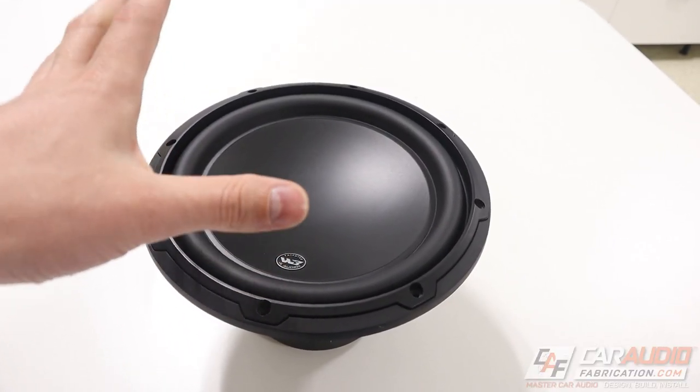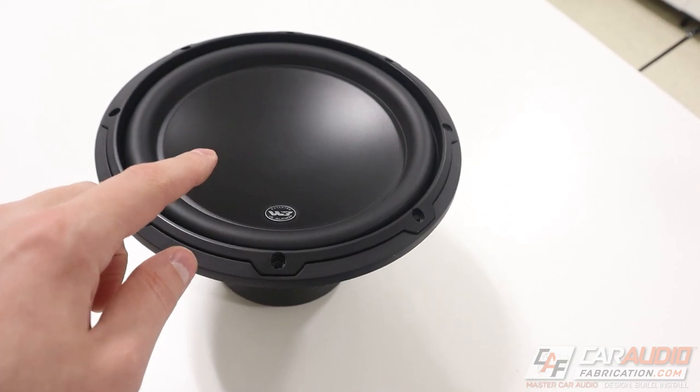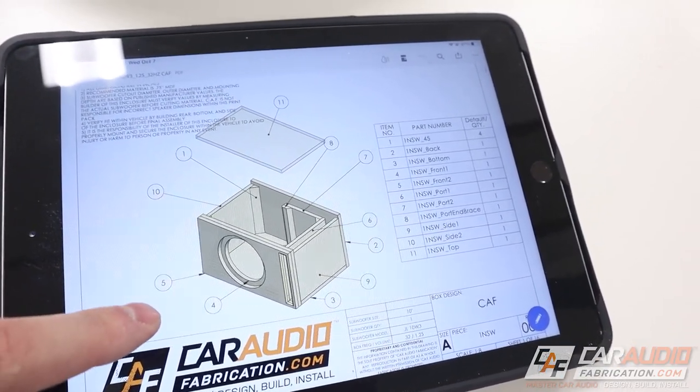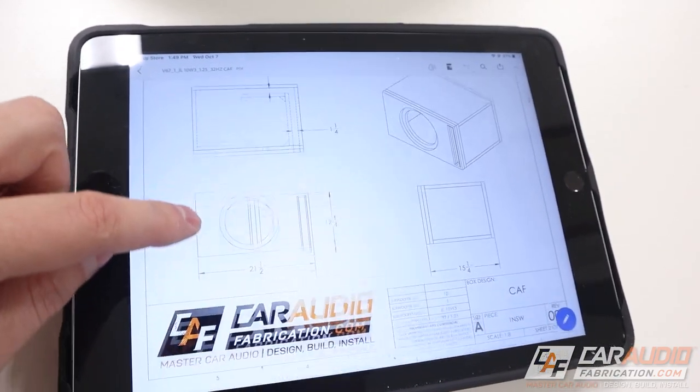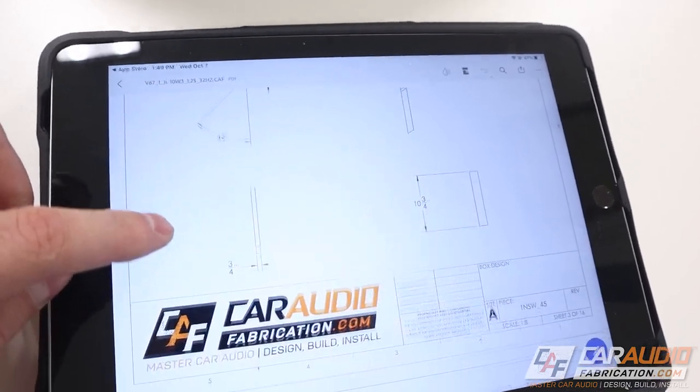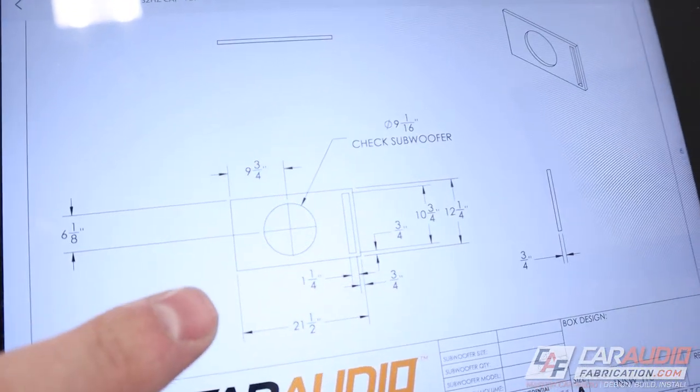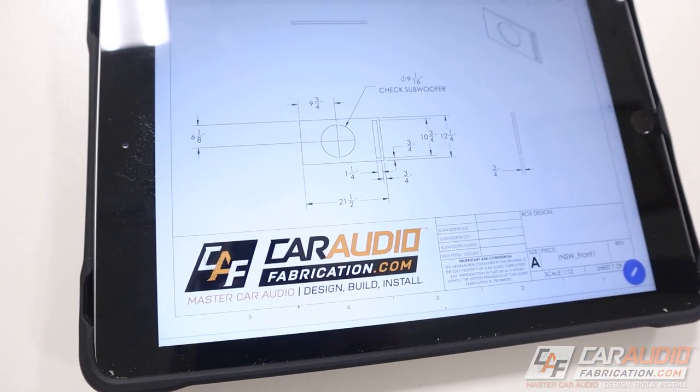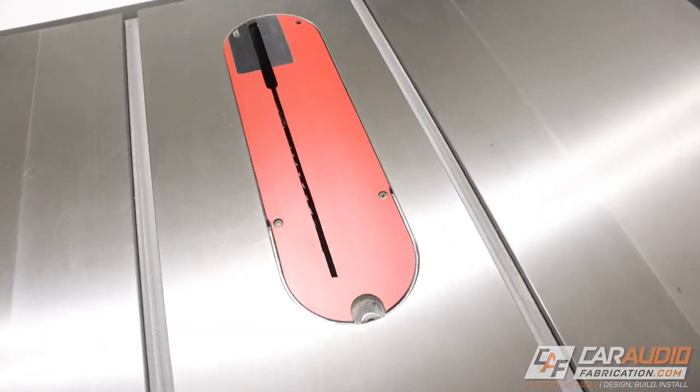Every subwoofer is a little bit different, so we want to make sure that we have a custom enclosure that is designed for the exact specs of this sub. I ended up designing this ported enclosure - 1.25 cubic feet tuned to 32 hertz with a slot port. If you guys need help with an enclosure blueprint design like this for your application that gives you the dimensions for every single board, I'd love to help. You can learn more at my website, caraudiofabrication.com. Now that I've got all these dimensions and a good plan, it's time to cut some wood at the table saw.